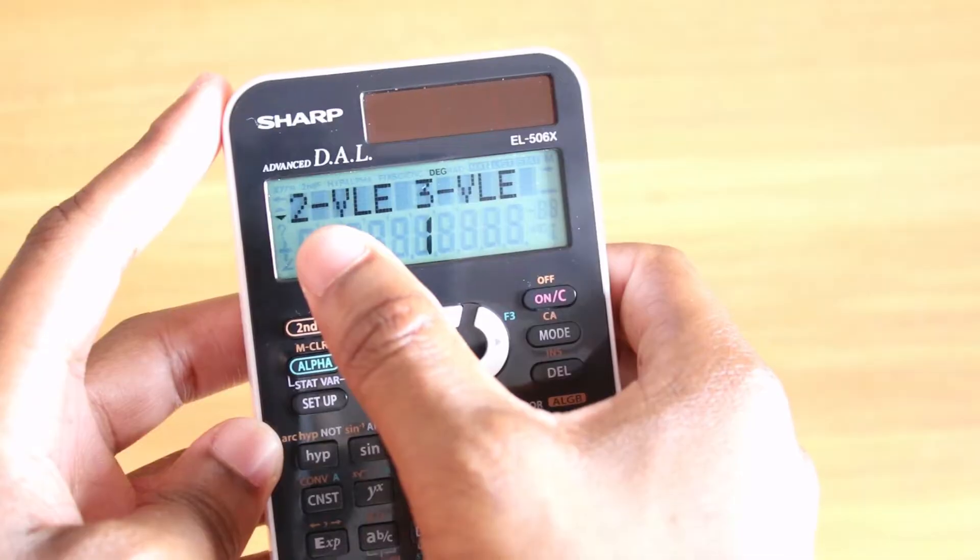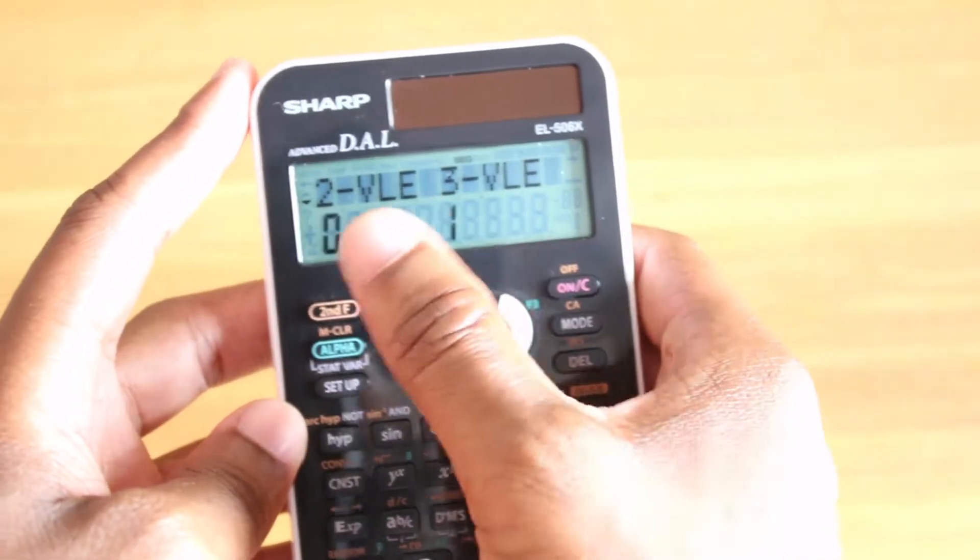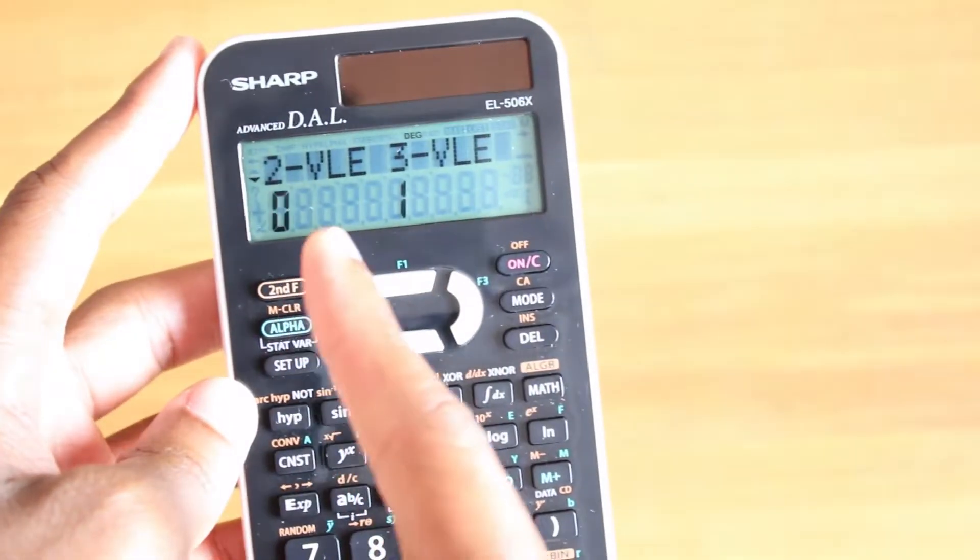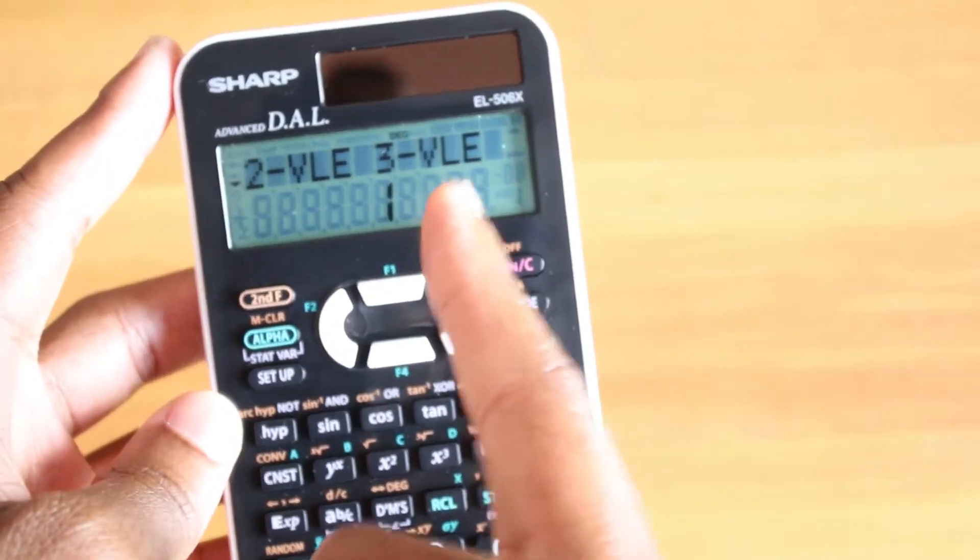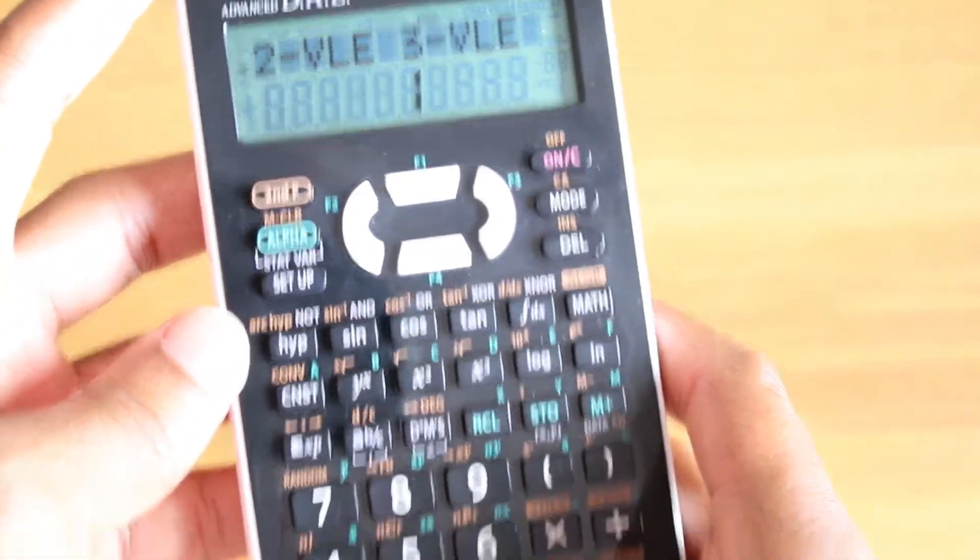You can go down - there's quadratic, cubic - but you want linear equations, simultaneous linear equations. There's two variables and three variable linear equations. For CSEC it's limited to two variables, so press zero.